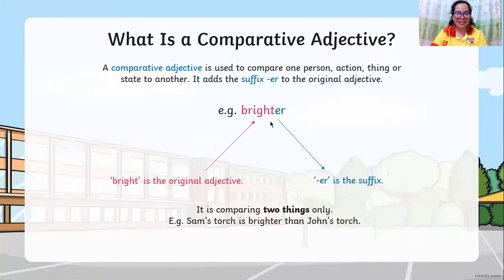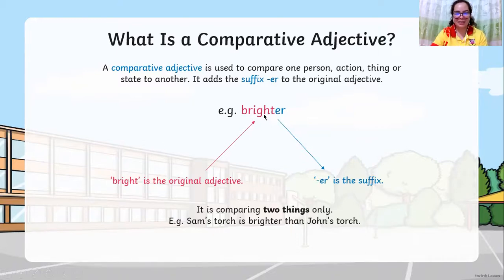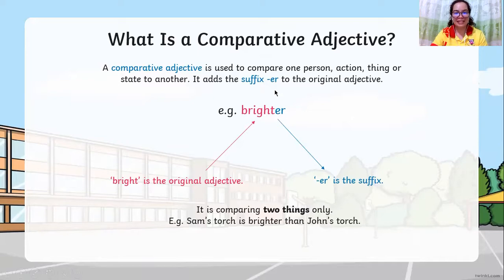For example, our adjective is 'bright.' You are just going to add -er. When we say suffix, that is the last part of your word — a word you add on to the original word. So 'bright' will become 'brighter' because you are comparing two objects.